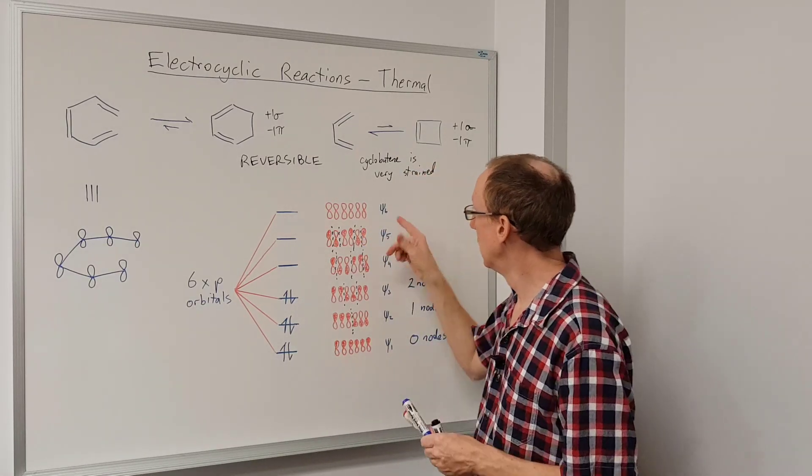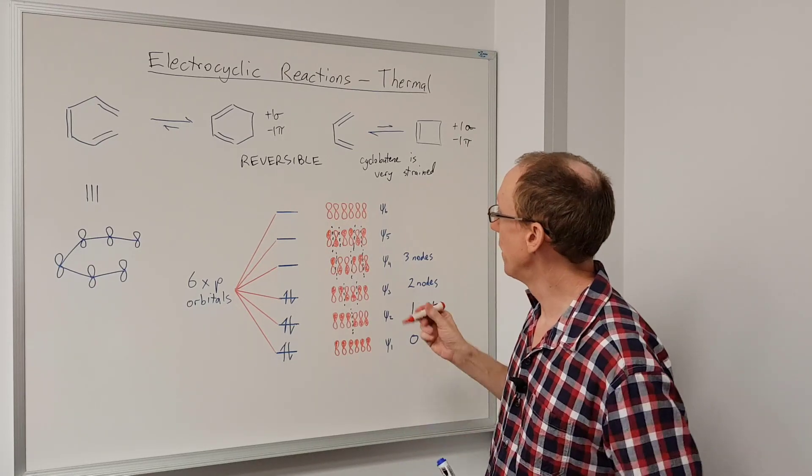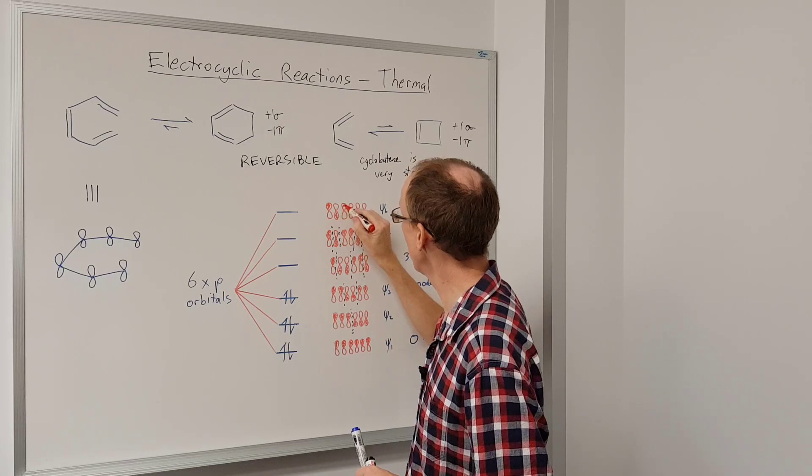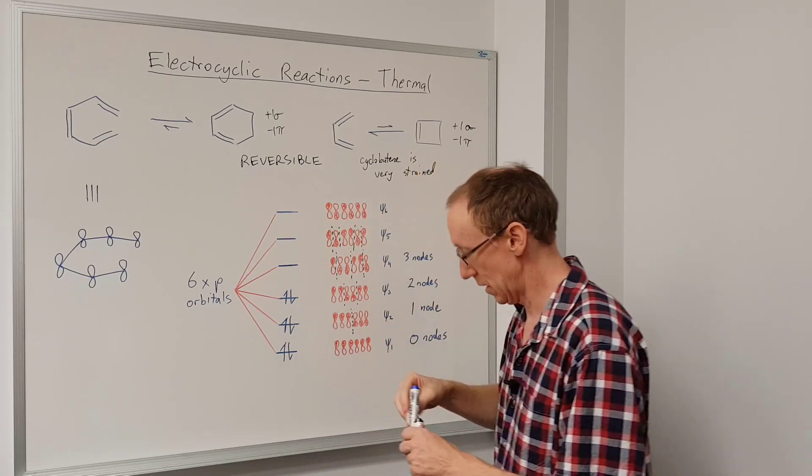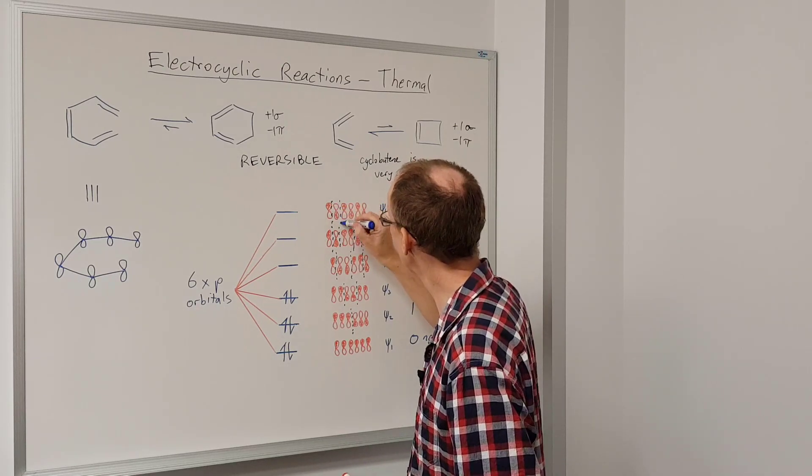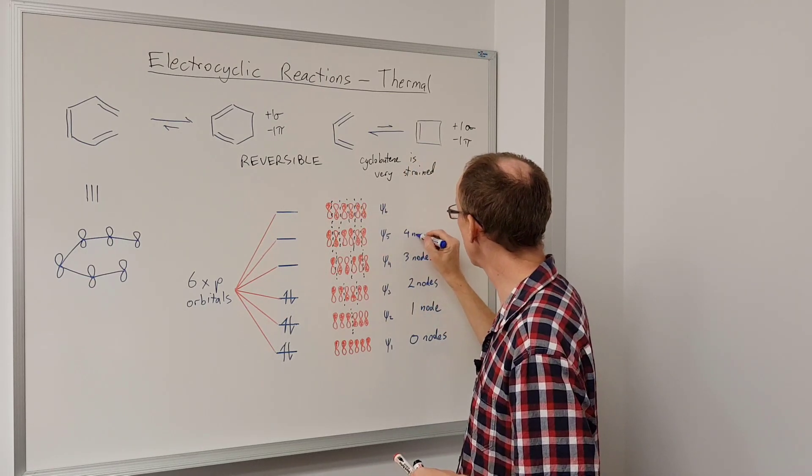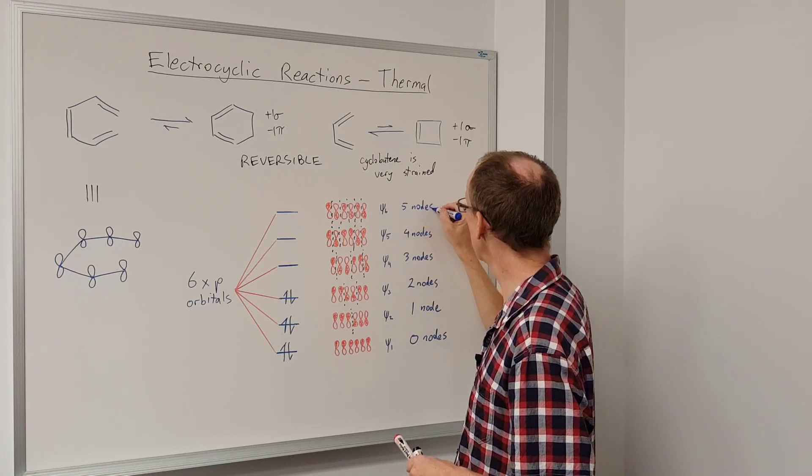And then finally, psi six is the highest energy because there's no bonding interaction. There's no p orbitals that are overlapping in phase with each other. So they just alternate like that. And so therefore we have one, two, three, four, five nodes. Four nodes here, five nodes here.